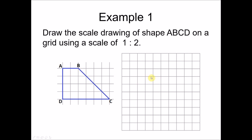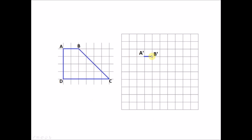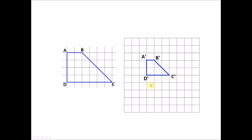This means 1 unit in our drawing represents 2 units of the object. For side AB, 1 unit here represents 2 units of the object, so we only draw 1 unit and label it A' and B'. For side AD there are 4 units, so half of it is 2. For side DC there are 6 units, so half is 3 units in the scale drawing.